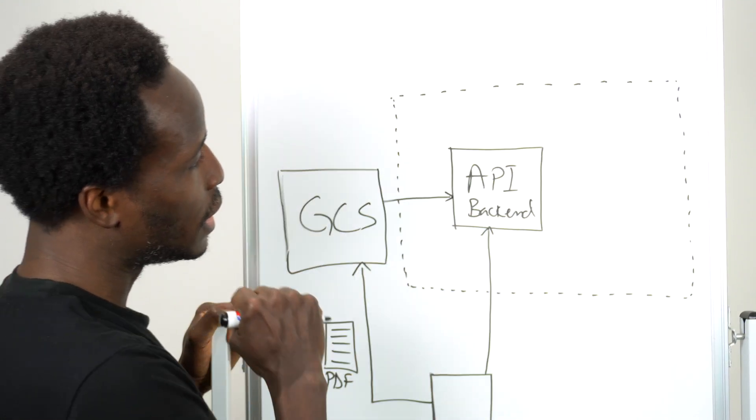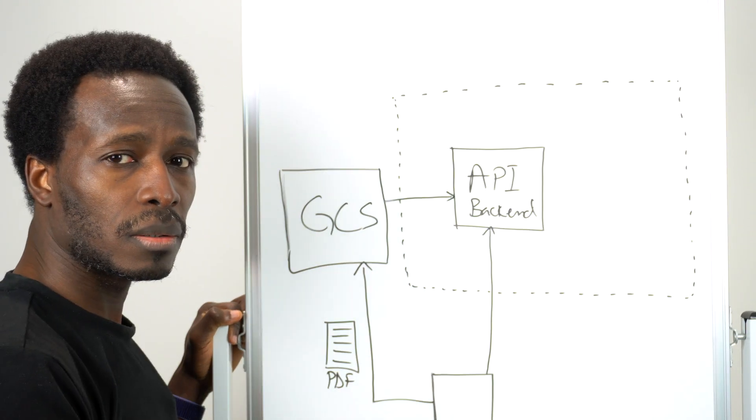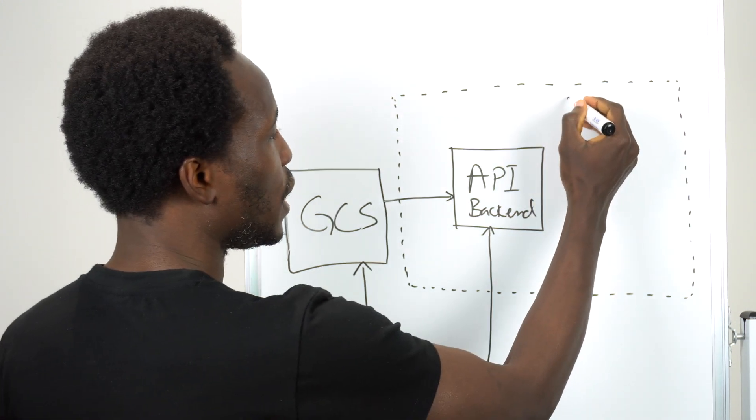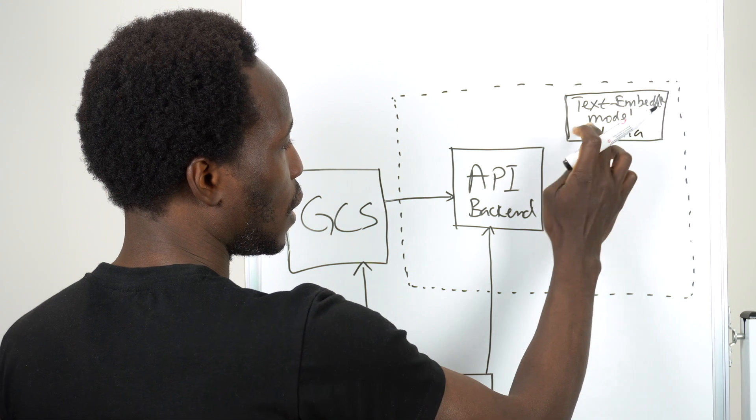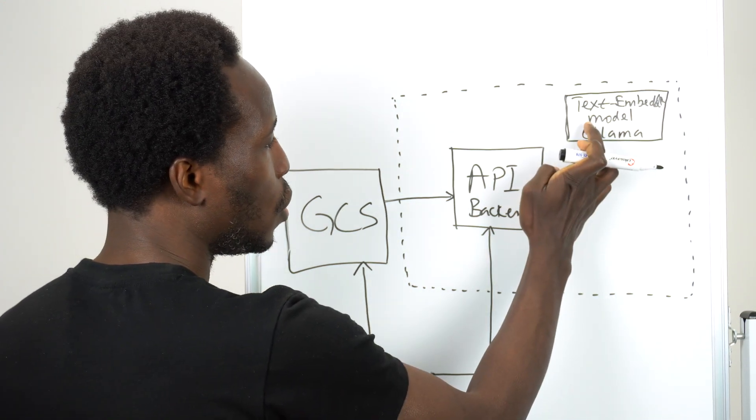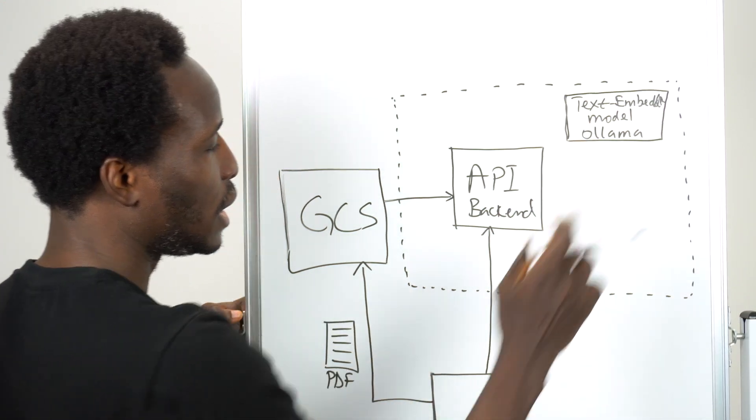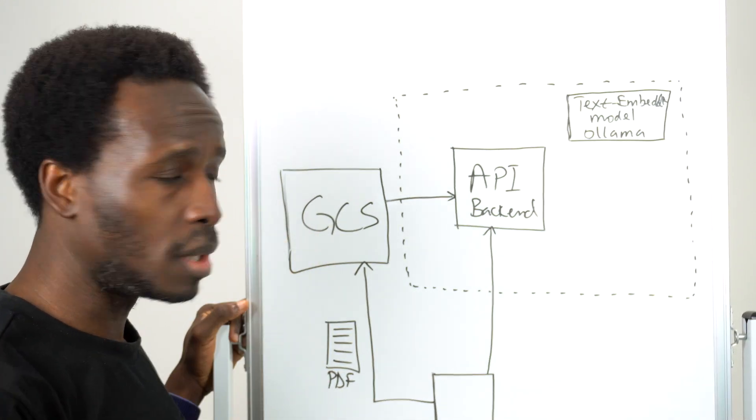Now, processing it, we need to use some models, text embedding models. So I can say our text embedding model. This is something we can run in Ollama. And yes, sounds like my name, Ollama. So we could run that text embedding model in Ollama. There's several of them, several text embedding models you can use.